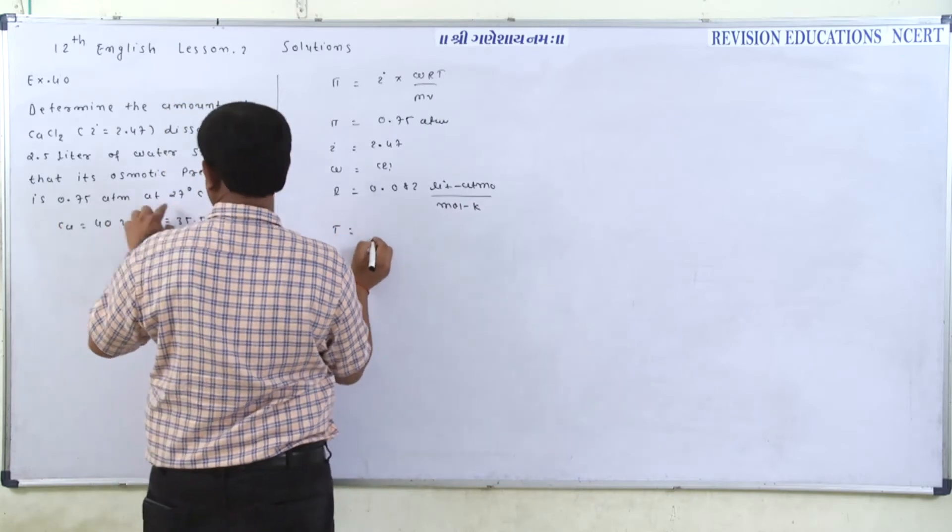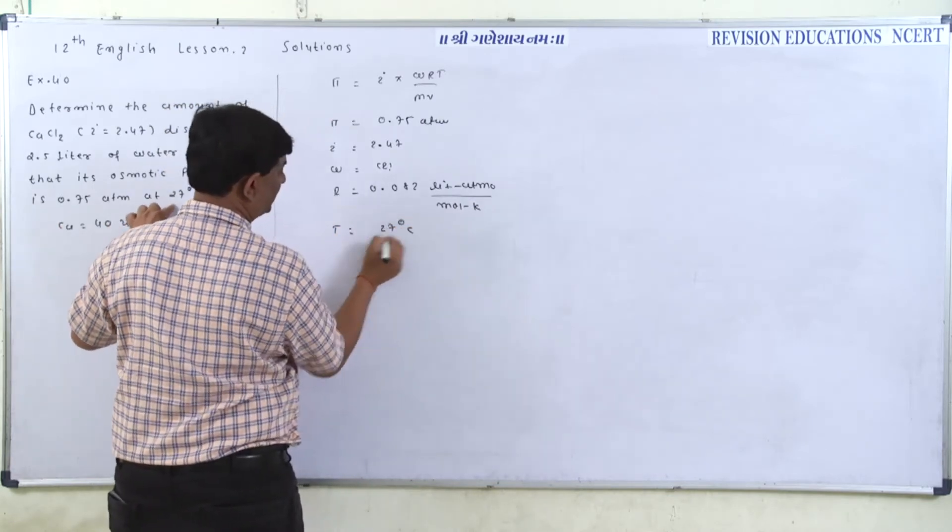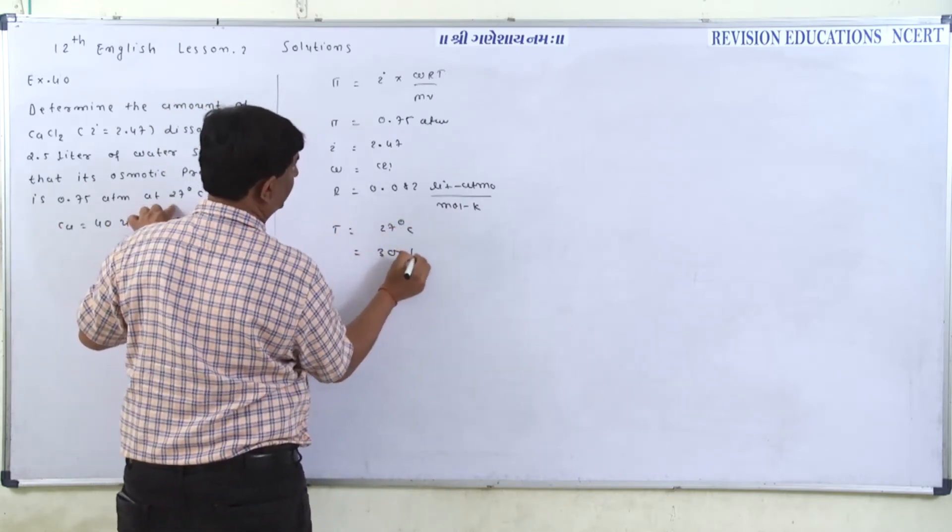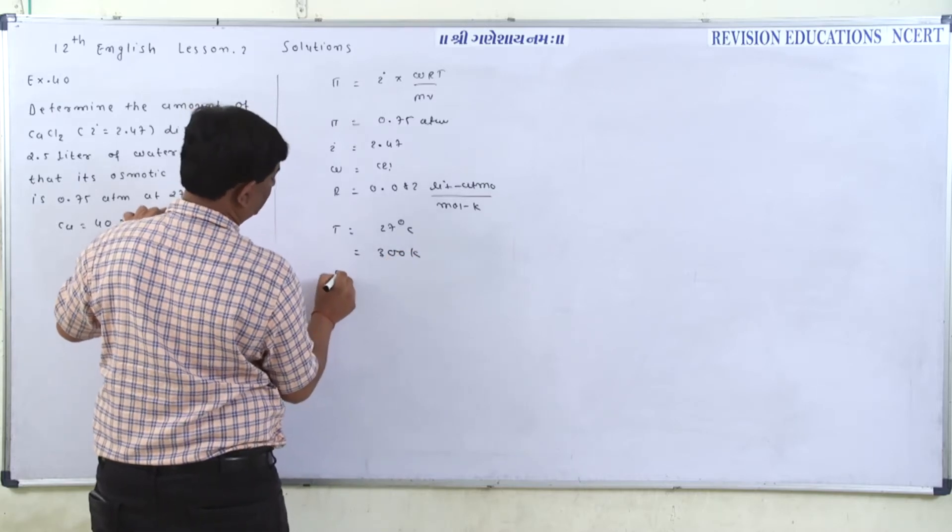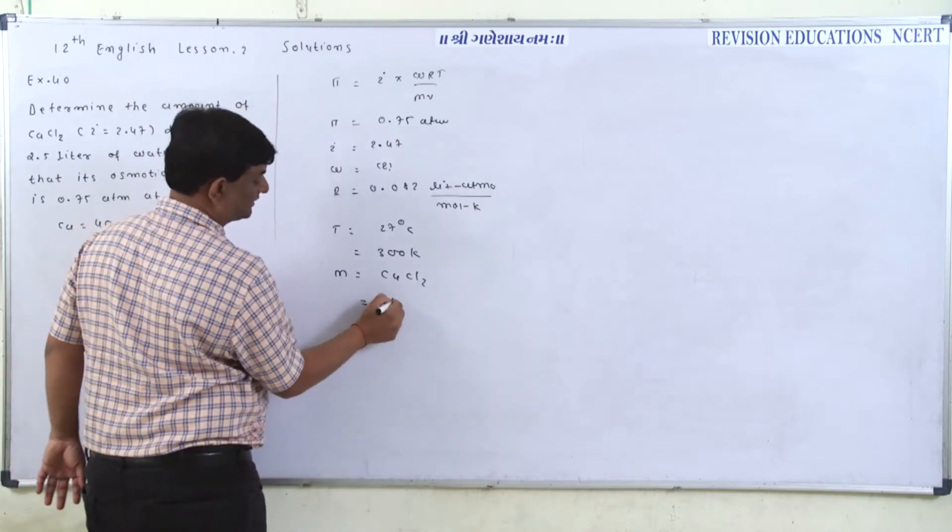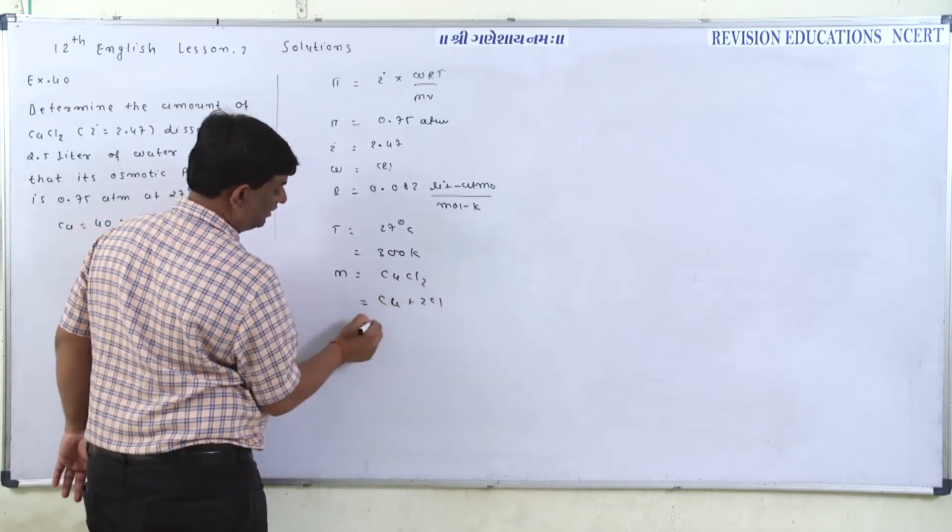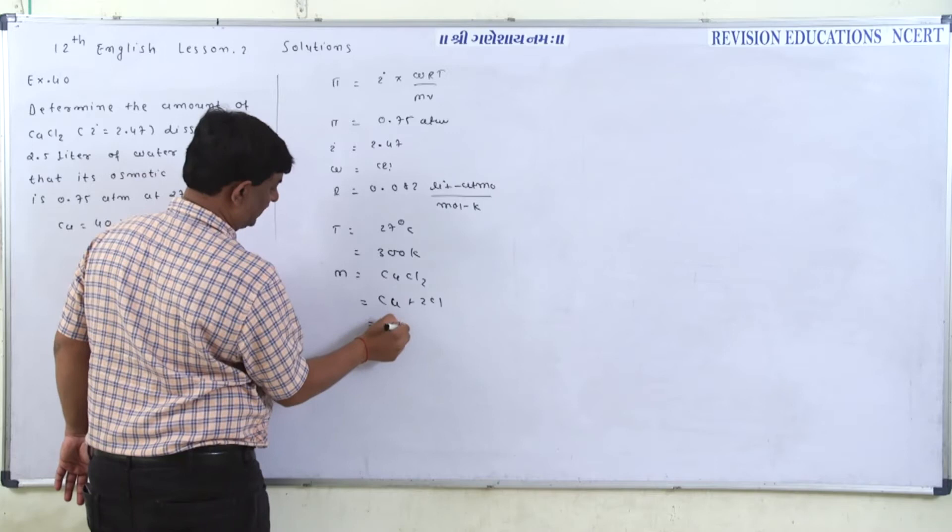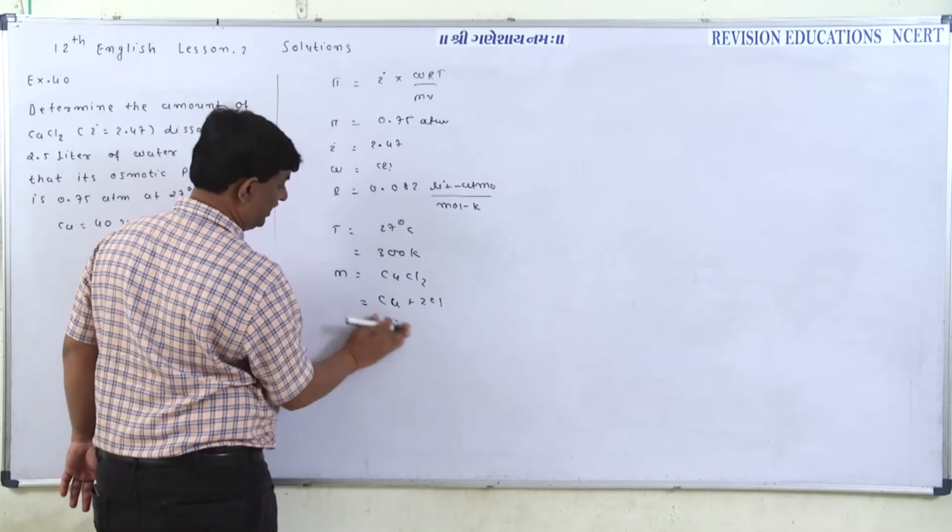Temperature T is 27 degrees Celsius, which means 300 Kelvin. M equals the molecular mass of CaCl2. So here we are looking at Ca plus 2 Cl. Ca is equal to 40.